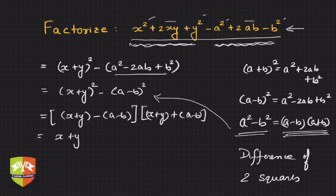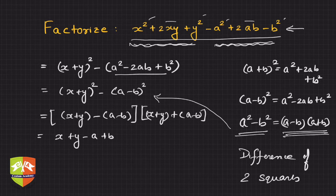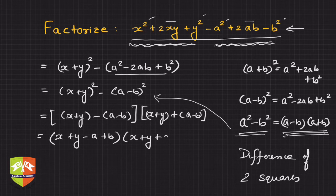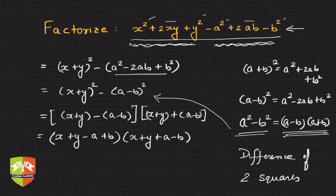Factor number one is x + y - a - b. Factor number two would be x + y + a - b. So if you see, we've got these two factors.